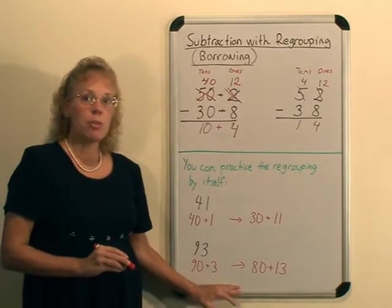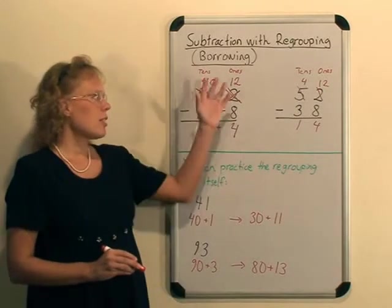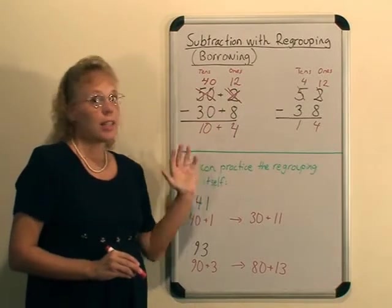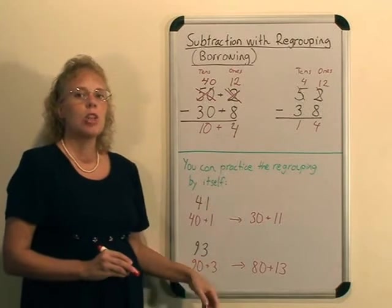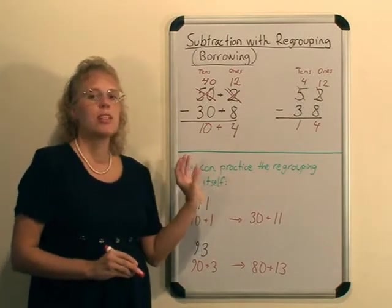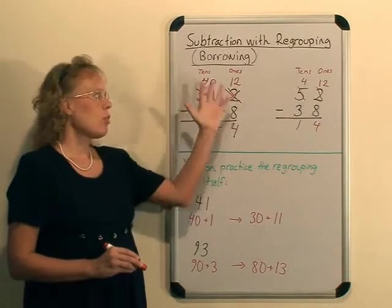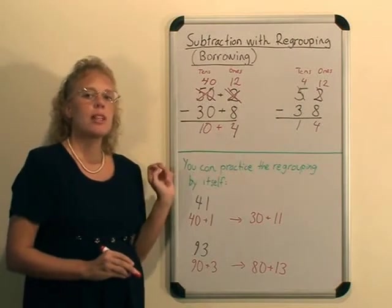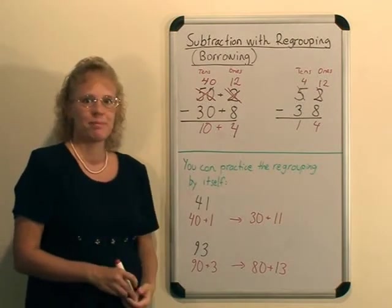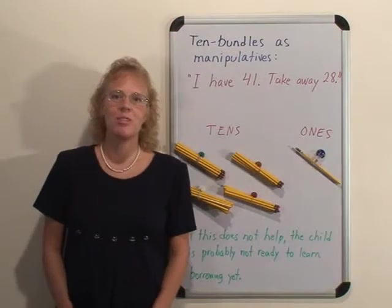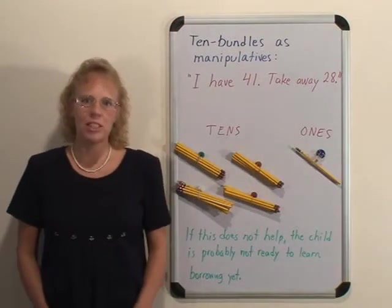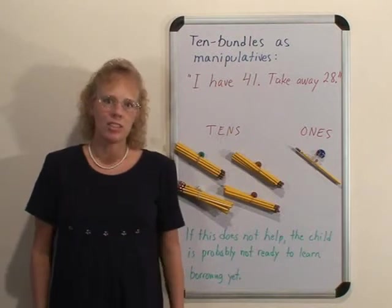There's no subtraction, all we do is regroup. It's first of all 4 tens and 1, and then it is a group of 3 tens and a group of 11. Here's another example: 93 would be 90 and 3, and then it becomes 80 and 13. If this kind of practice still doesn't help the child with the subtraction itself, then you might need to take manipulatives.